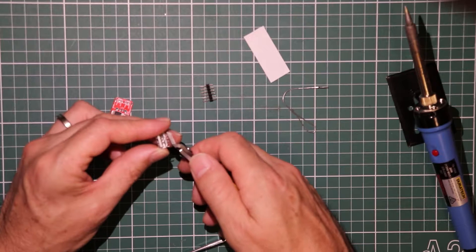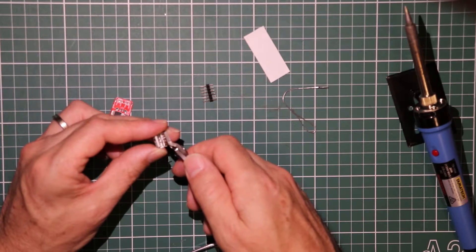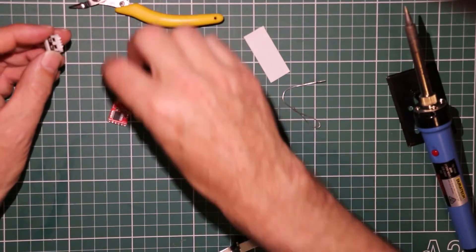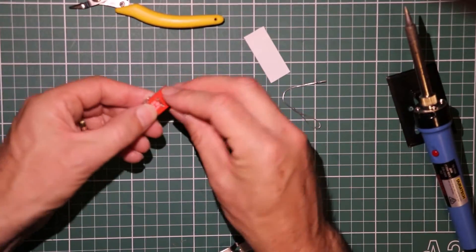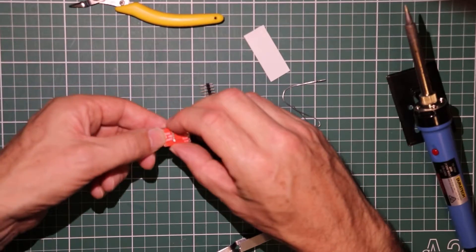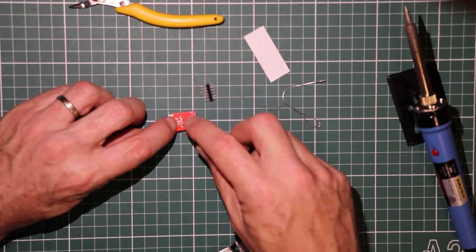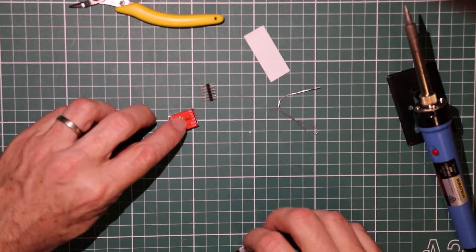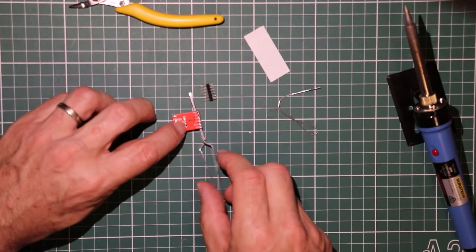And check again that nothing's protruding through the red PCB. Yep, that's nice and flush. And it's going to be very easy to solder on the two power legs first.